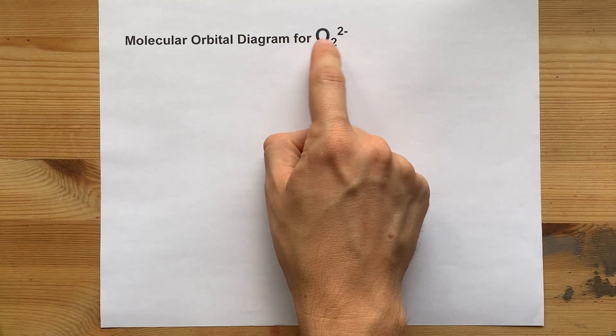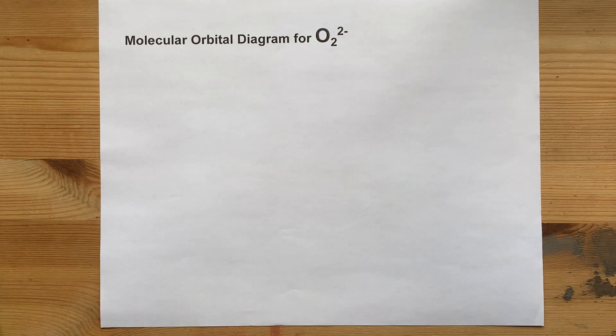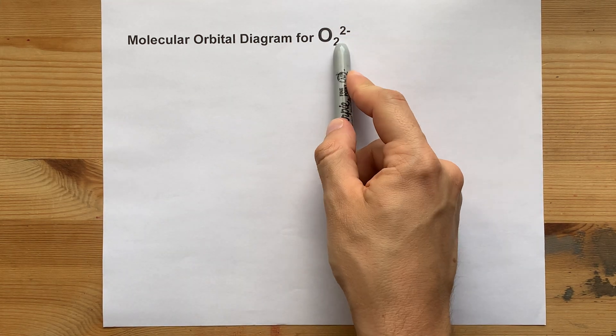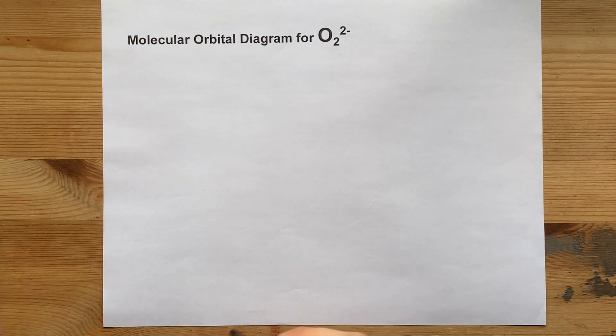Molecular orbital diagram for O2 with a minus two charge. This is actually the peroxide ion, which does exist, so spoiler alert, it's pretty stable.